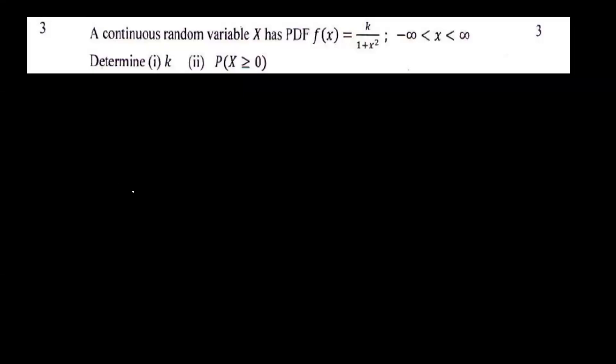A continuous random variable x has PDF f of x equal to k divided by 1 plus x squared. Determine first, one: k, second: the probability of x greater than or equal to 0. We have a continuous random variable x with PDF f of x equal to k divided by 1 plus x squared.